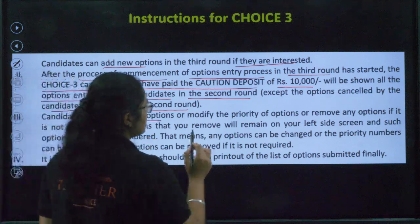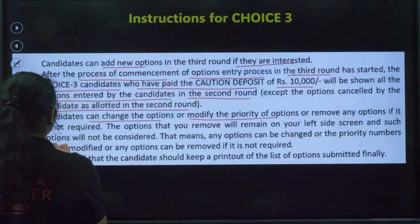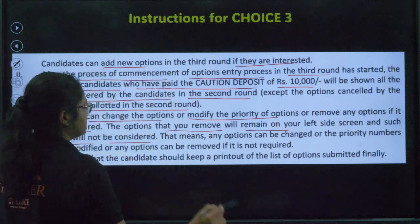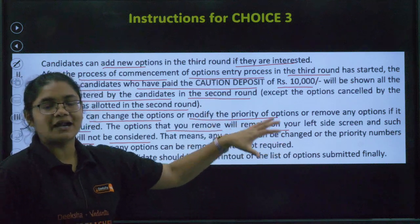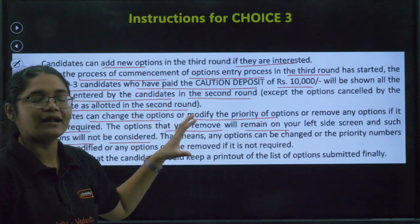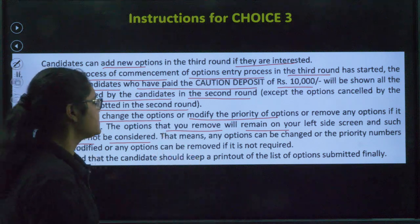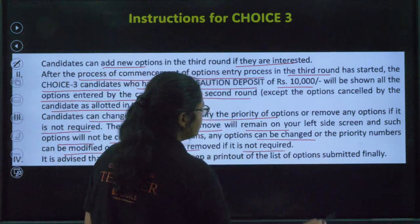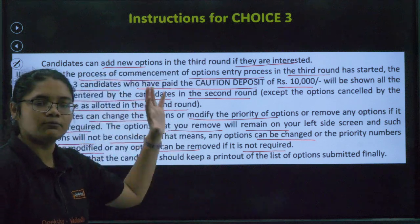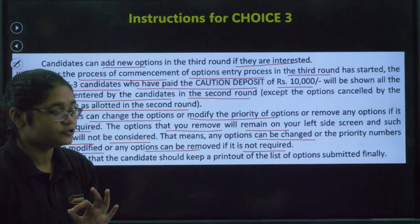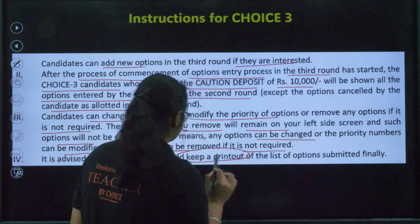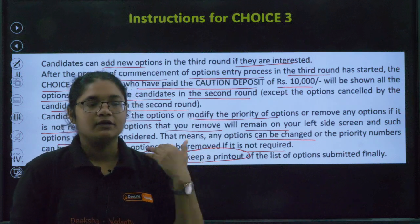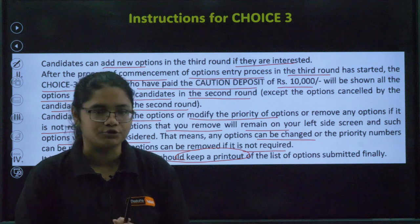Candidates can change the options, modify the priority of options, or remove any options if not required. The options you remove will appear on the left side of the screen and will not be considered in your option entry list. So you can modify, remove, or even add new colleges. You are also instructed to keep a printout of the final option entry list so you have a record of all colleges you have entered.